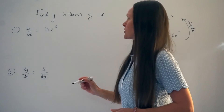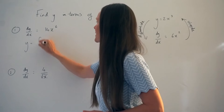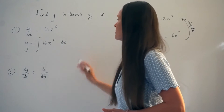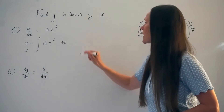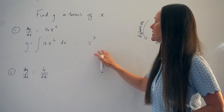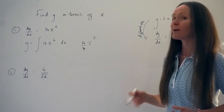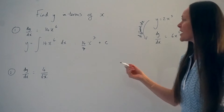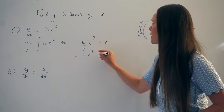So here is the first question: dy by dx equals 14x to the 6th. To work out the equation y equals something, I'm integrating this expression — 14x to the power of 6 with respect to x. Remember, when you're integrating, you raise the power on the x by 1 and divide by the new power. So if I raise this power by 1, I'm left with x to the power of 7. Then we're dividing 14 by the new power, which is 7. And remember to add your constant c. In this question there's no way of working out what the constant is, but you must write it down.